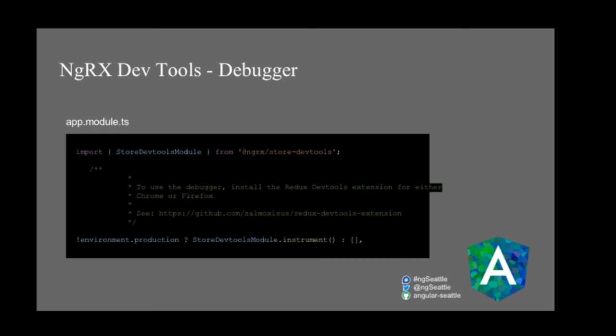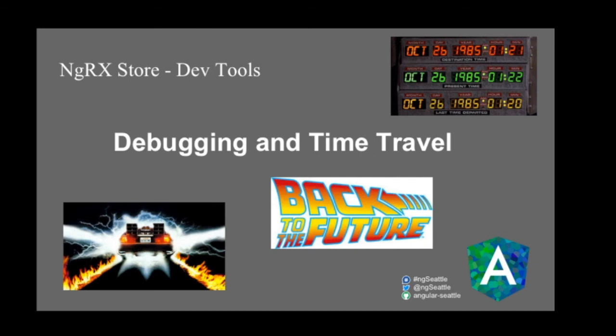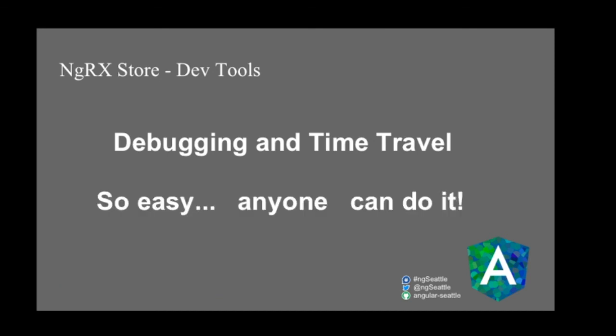The NgRx debugger can be set up with just one line of code. Include StoreDevTools from NgRx and add one line to enable the debugger only when not in the production environment. To use it, download the Redux DevTools extension from the Chrome store. Once installed, the icon will be enabled on any page that uses Redux or NgRx.